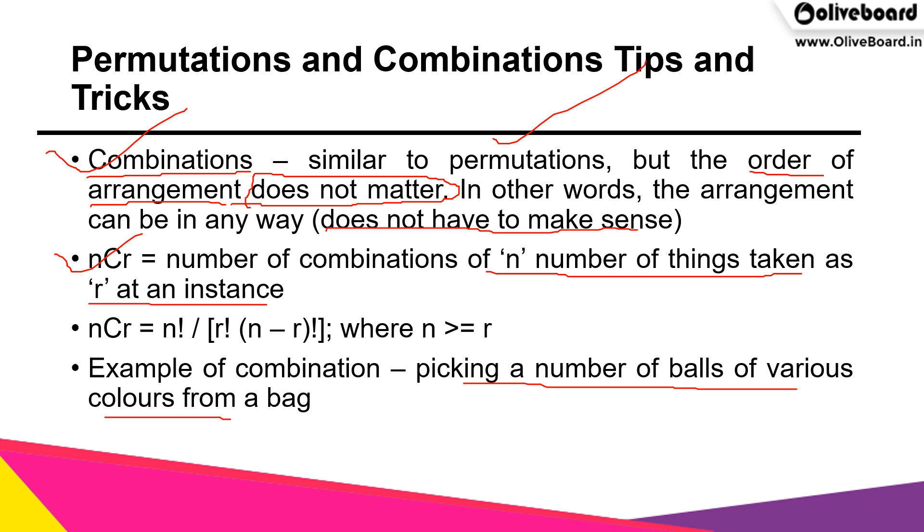For example, picking a number of balls of various colors from a bag is a combination because it doesn't matter whether you pick the green ball first or the red ball. At the end of the day you are getting the colors anyway, so how does it matter?